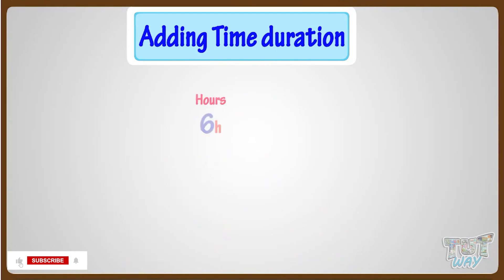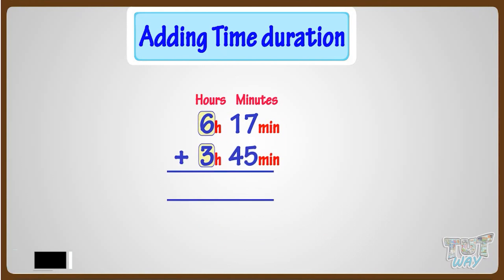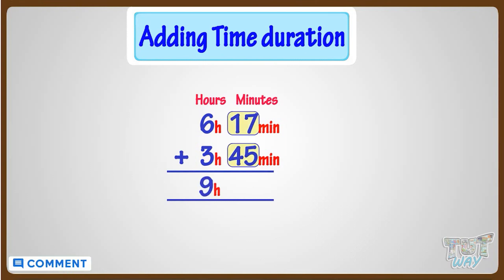We have to add 6 hours, 17 minutes, and 3 hours, 45 minutes. Adding hours, we get 9 hours, and adding minutes, we get 62 minutes.